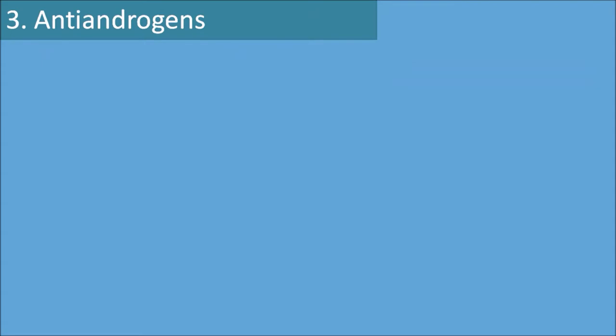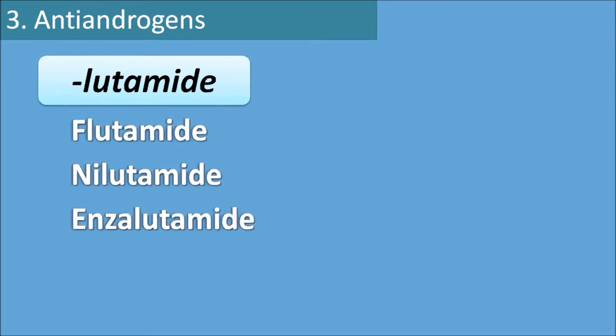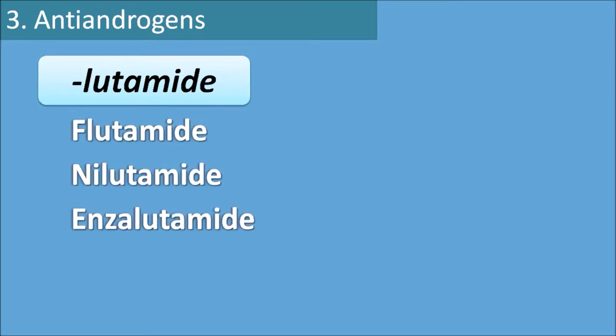The third category is antiandrogens, which have the suffix 'lutamide'. Examples include flutamide, nilutamide, and enzalutamide. However, one drug — cyproterone — is also an antiandrogen but does not have the suffix lutamide.